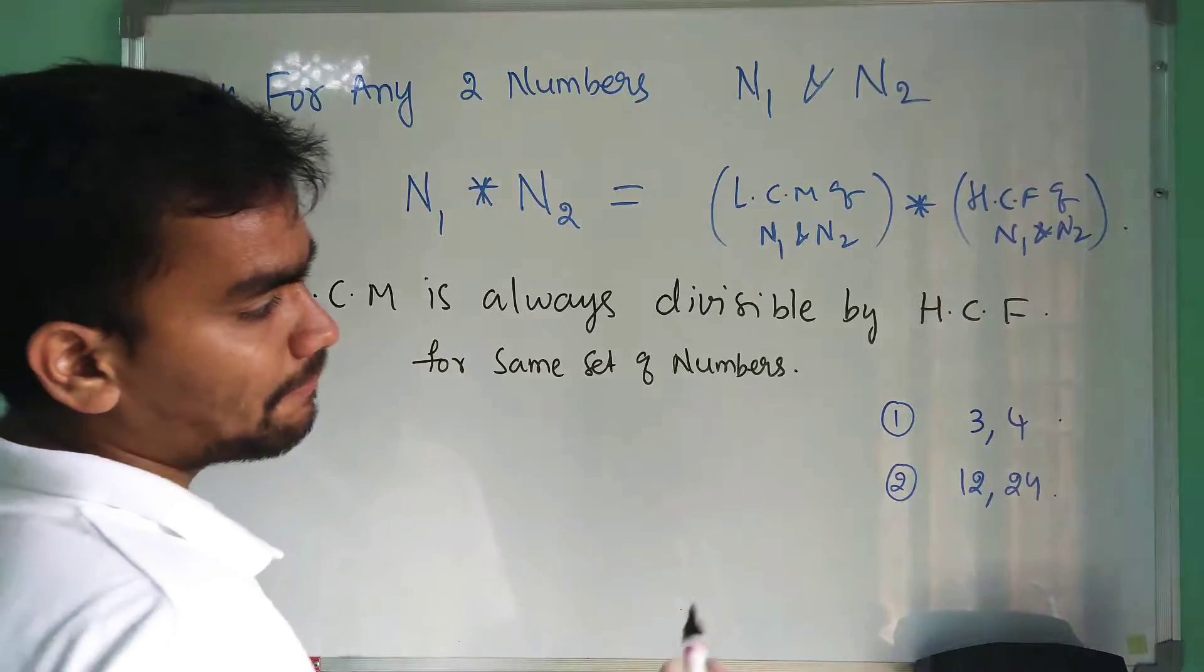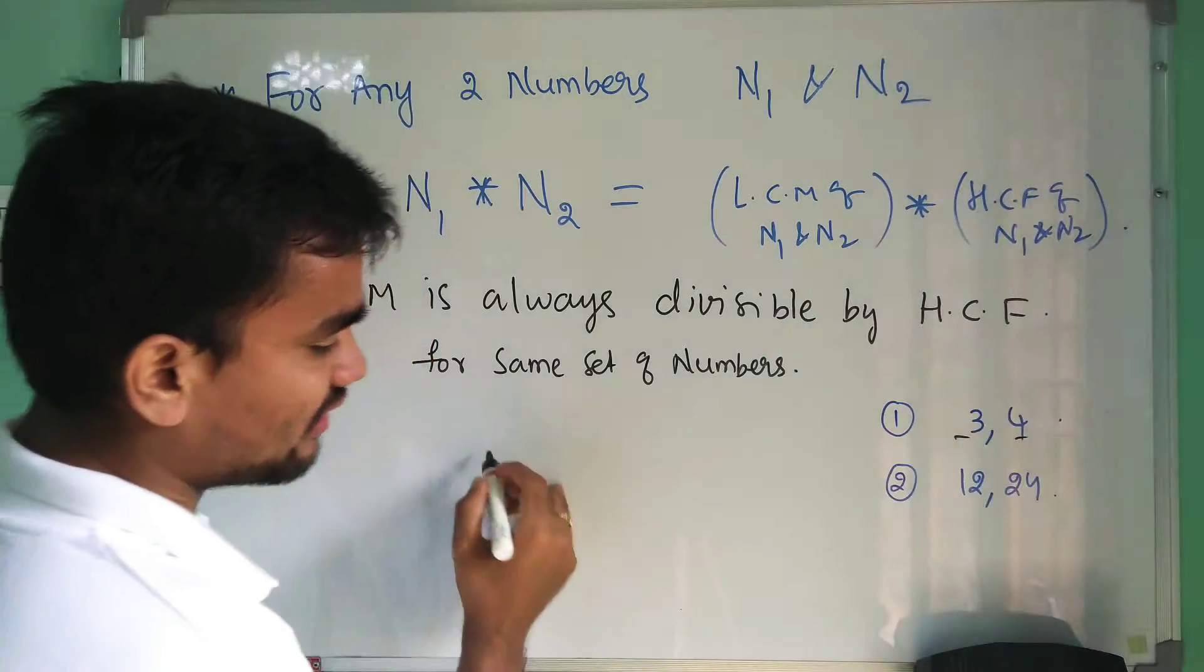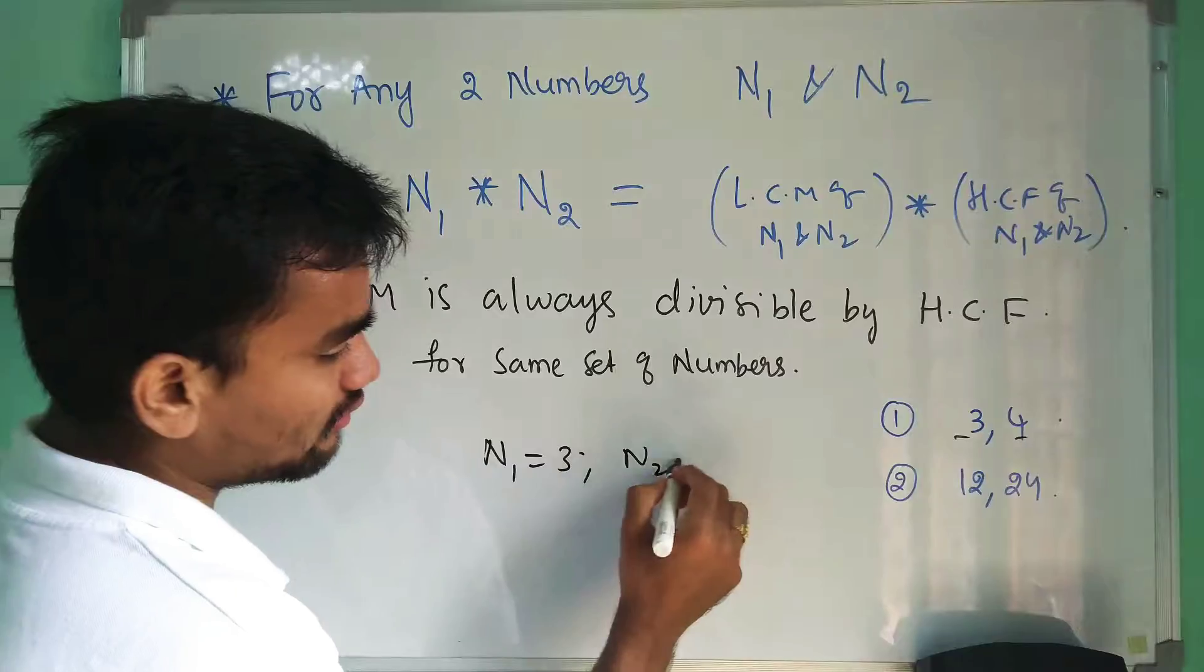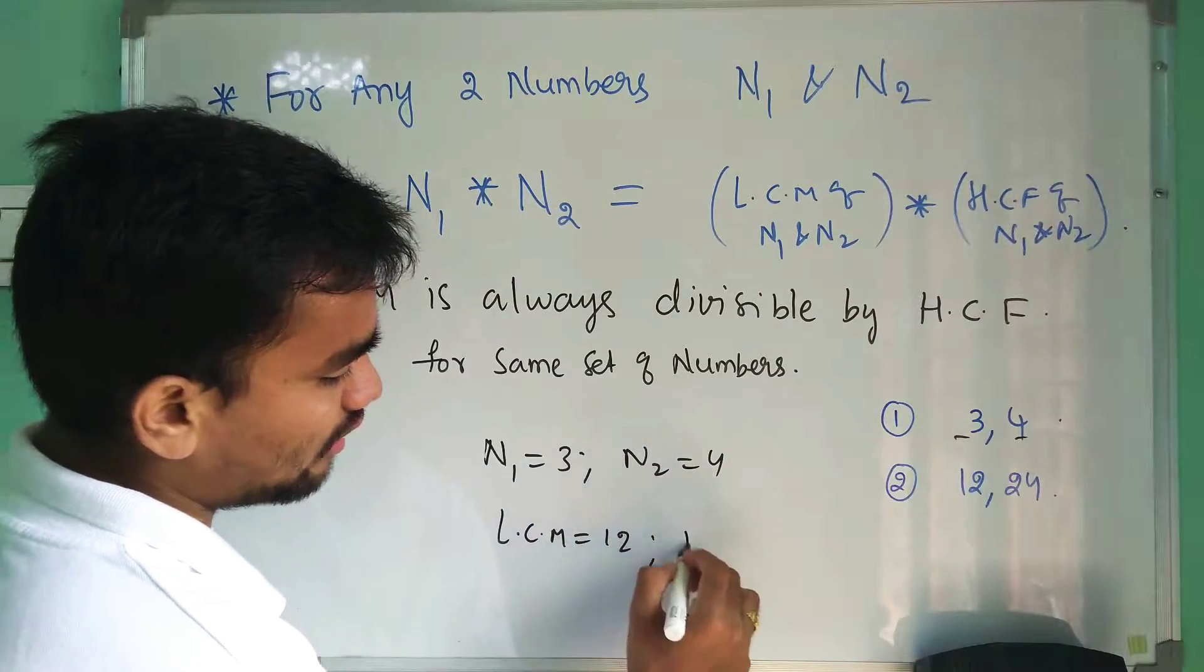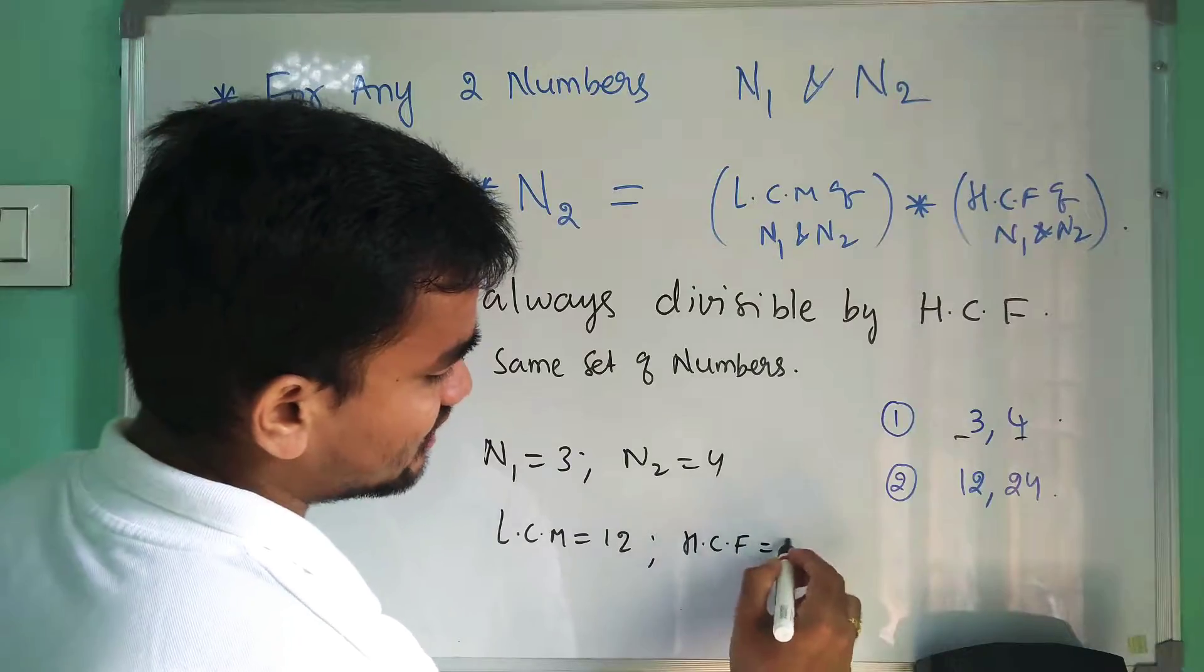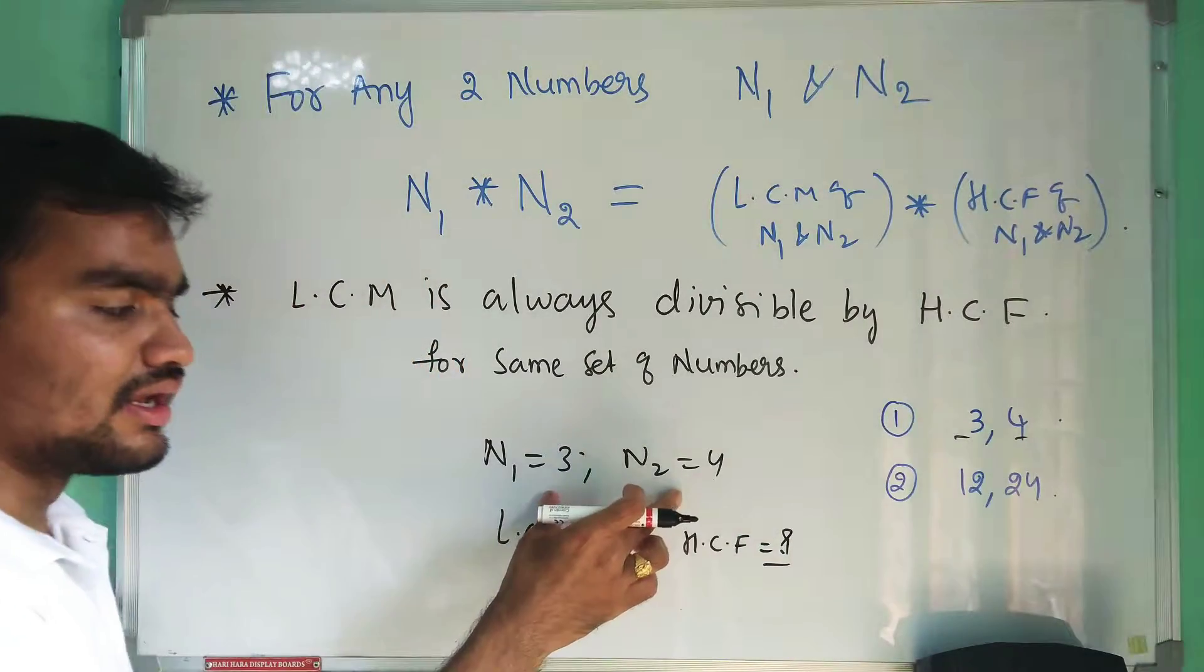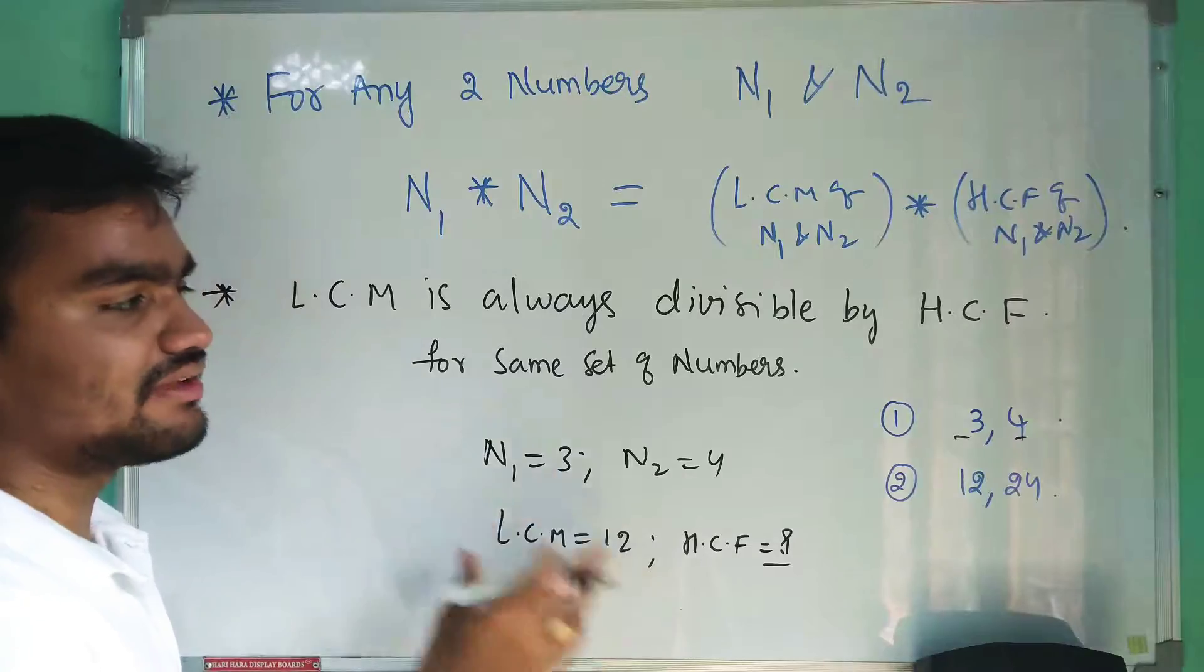The question may ask like this: he will give two numbers, for example n1 equals 3 and n2 equals 4, and he will give LCM of them as 12. Then you have to find HCF. He will ask what is the HCF if the two numbers are given and if the LCM of them is given.